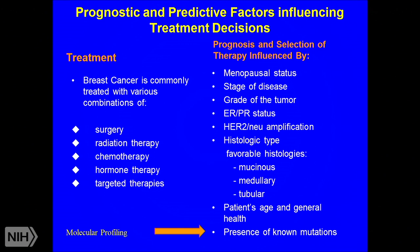Breast cancer is commonly treated with various combinations of surgery, radiation therapy, chemotherapy, hormone therapy, and targeted therapy. In making treatment decisions, we consider clinical factors: menopausal status, stage, tumor grade, hormone receptor status, HER2 status, histological type, patient age, and ability to tolerate chemotherapy. Now, molecular profiling is also a major factor — it tells us about the presence of mutations and guides personalized treatment.